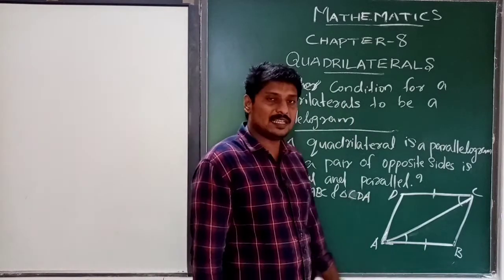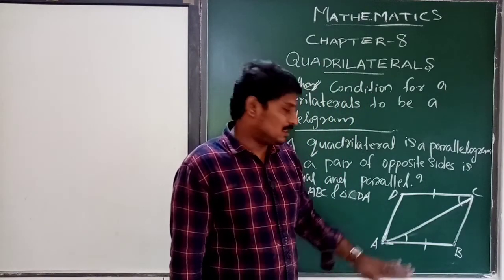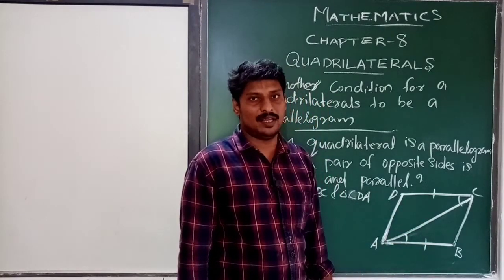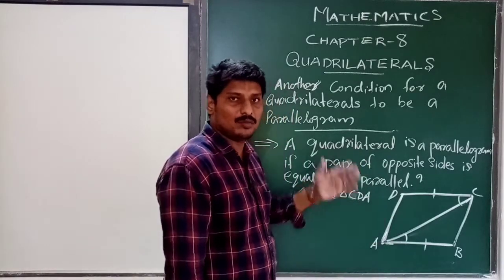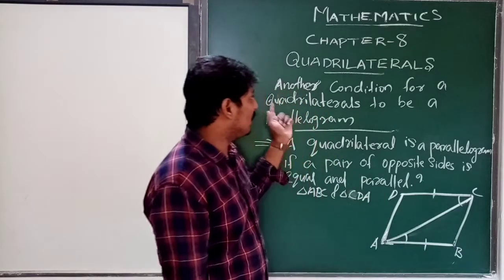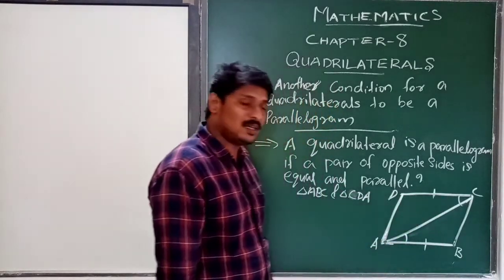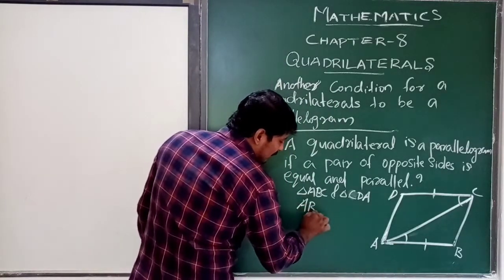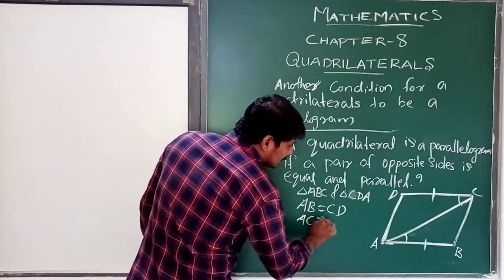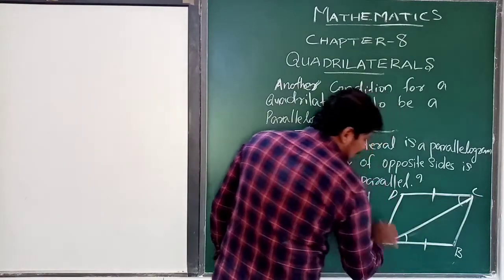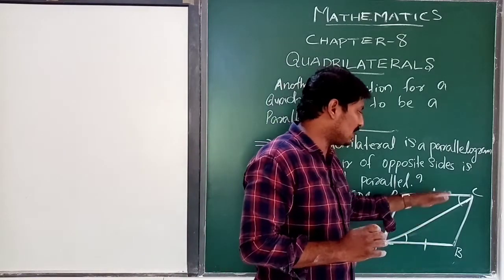Consider triangle ABC and triangle CDA. We prove these two triangles congruent to each other. In the figure, AB is equal to CD — side AB and side CD are equal. By construction, AC is equal to AC, which is the common side of the two triangles.